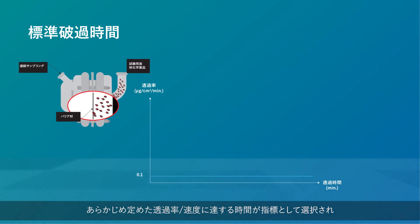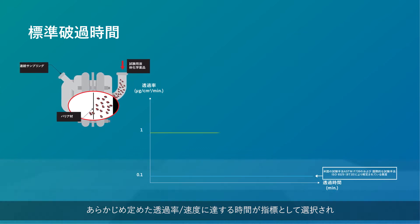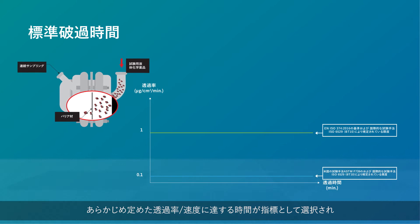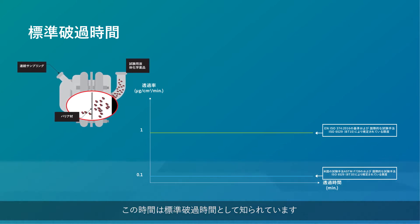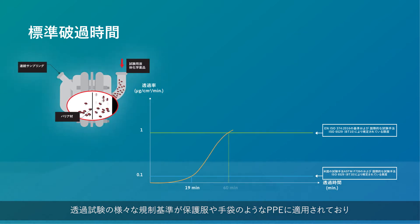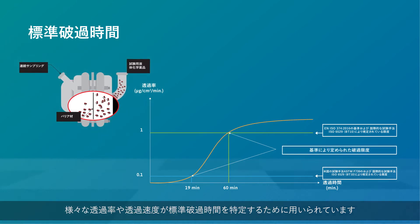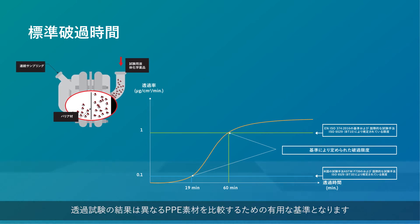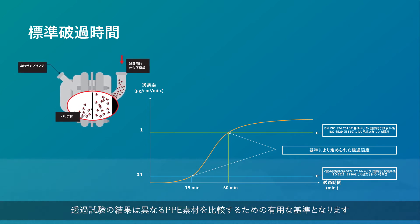This parameter is chosen to be the time taken to reach a predefined rate or speed of permeation, and this time is known as the normalised breakthrough time. Different regulatory standards for permeation testing are available for PPE clothing and gloves, and different rates and speeds are used to determine the normalised breakthrough times. The results can serve as a good benchmark for comparing different PPE materials.